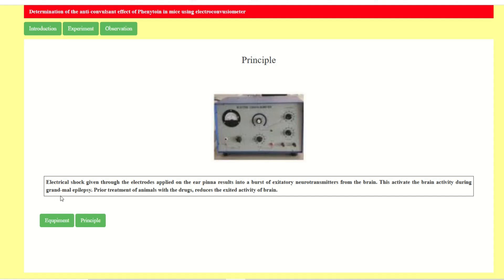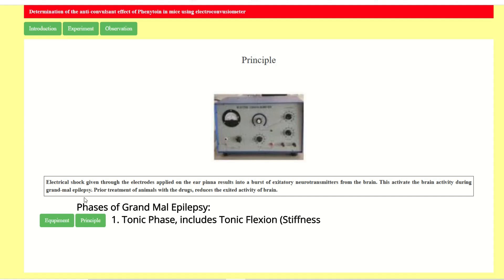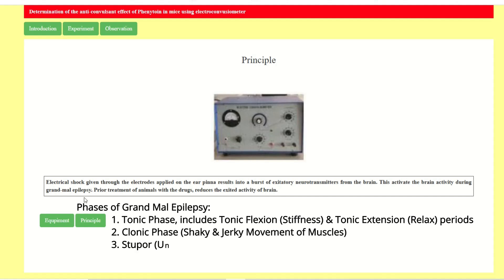When we induce grand mal epilepsy, it produces three phases. The first is the tonic phase. In tonic flexion, it shows stiffness — all the large limbs get closer to each other. Then it will relax into tonic extension, where all the large limbs get relaxed. Both tonic flexion and tonic extension come under the tonic phase.